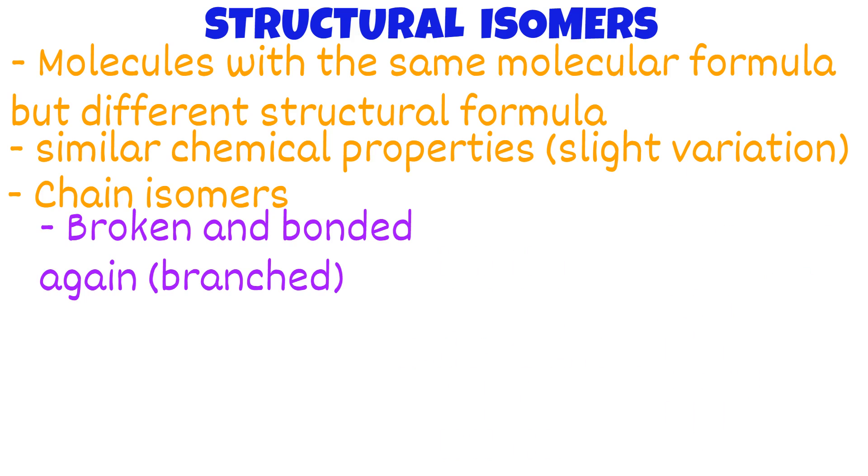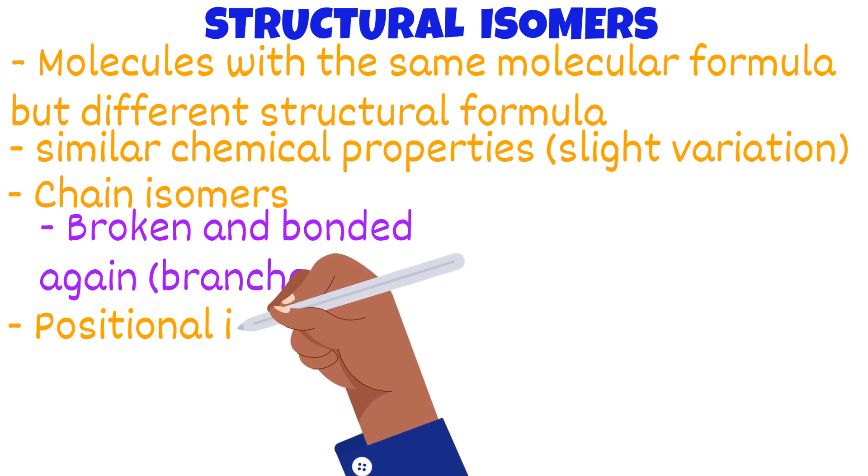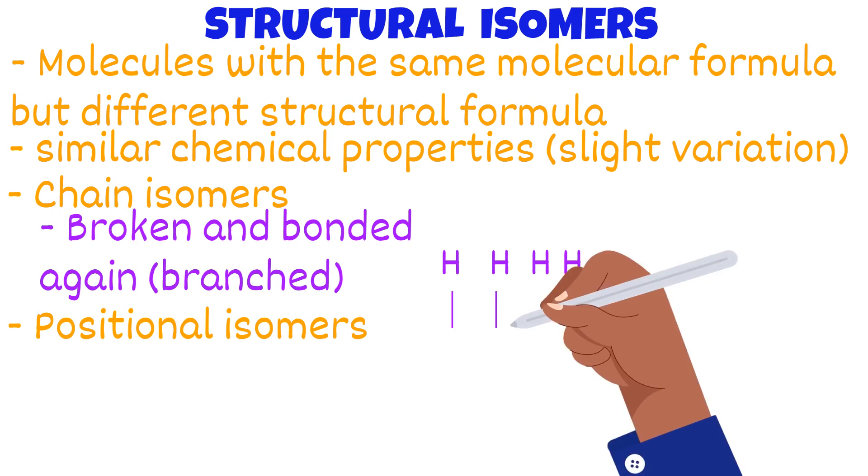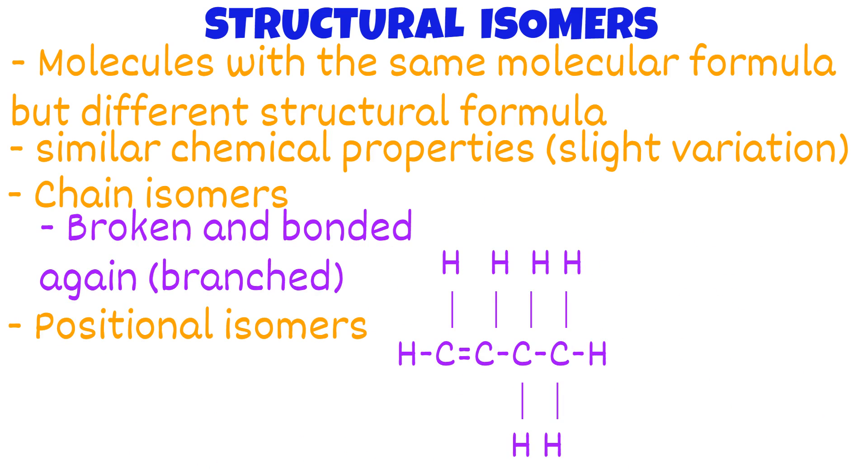The other type of structural isomer is the positional isomer. Look at but-1-ene. The double bond is between 1 and 2. If we move that position, it becomes but-2-ene. That is positional isomers.